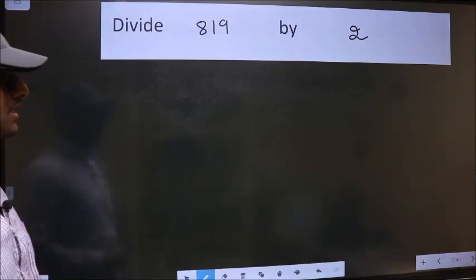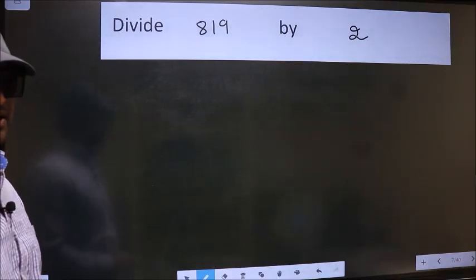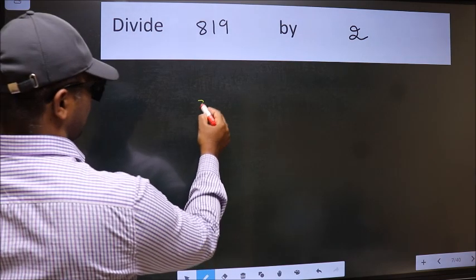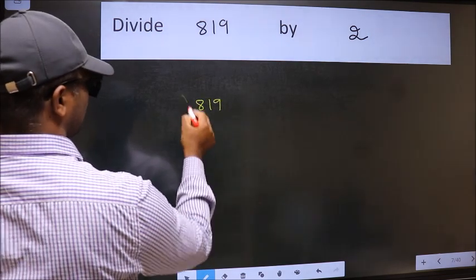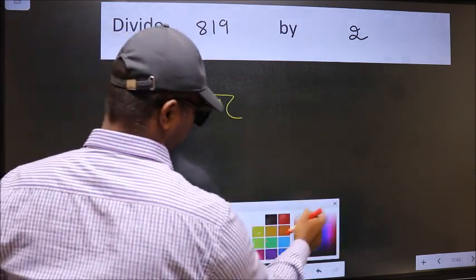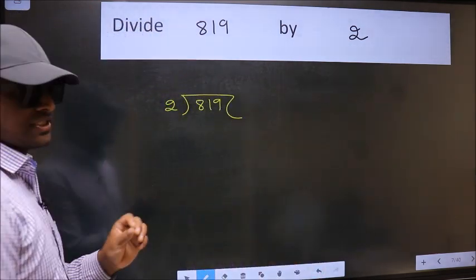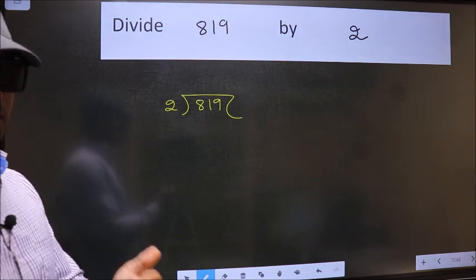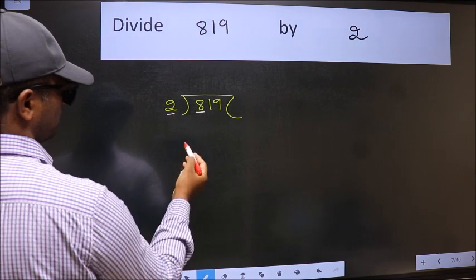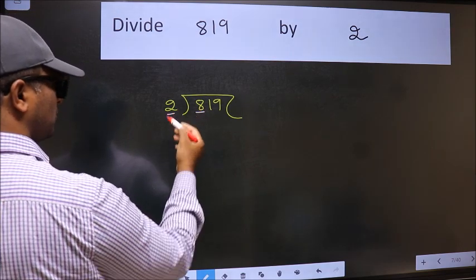Divide 819 by 2. To do this division, we should frame it in this way: 819 here and 2 here. This is your step 1. Next, here we have 8 and here 2. When do we get 8 in the 2 table?